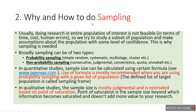The next question is: why and how to do sampling? Doing research on the entire population of interest is usually not feasible in terms of time, cost, resources, and human errors. So we try to study a subset of the population and make assumptions about the population with some level of confidence. Broadly, sampling is of two types: probability sampling and non-probability sampling. In probability sampling, participants have a fixed or defined probability — usually the same probability — of being selected.